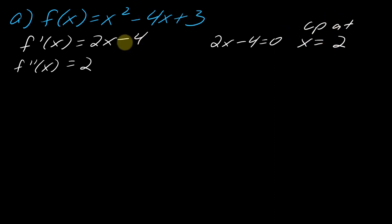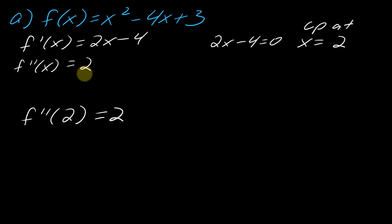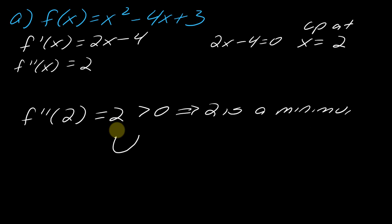Now I examine the second derivative at the critical point x equals 2. In this case the second derivative is a constant, so plugging in any value — including 2 — gives 2. Since 2 is greater than zero, the function is concave up, which means x equals 2 is a local minimum. This makes sense because the function is a parabola that opens upward.